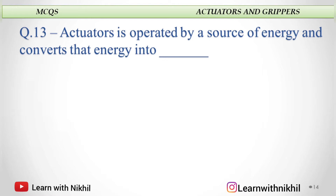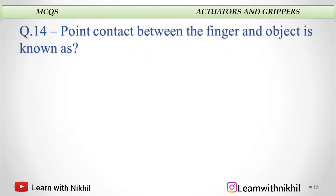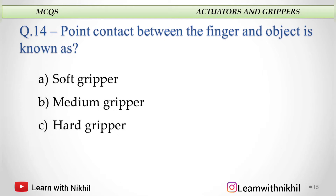An actuator is operated by a source of energy and converts that energy into: A. Power, B. Motion, C. Current, or D. Signal? And the answer is motion. Point contact between the finger and object is known as: soft gripper, medium gripper, hard gripper, or heavy gripper? And the answer is hard gripper.